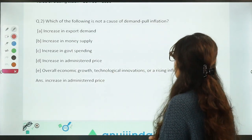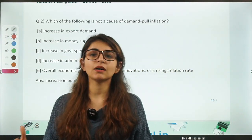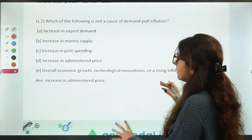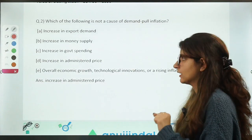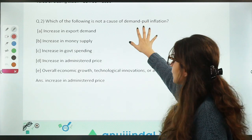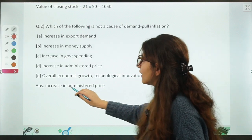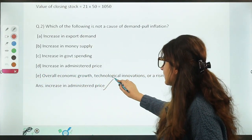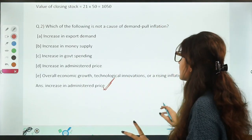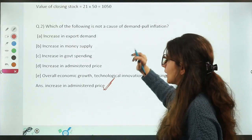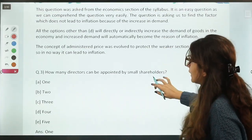Which of the following is not a cause of demand pull inflation? Again, a very easy question. When we study inflation, it is basic to understand its causes. The causes of inflation are characterized into two parts: demand pull inflation and cost push inflation. Various causes are covered under demand pull inflation. The answer is 'increase in administered price' because if the cost price of a value increases, that comes under cost push inflation and not under demand pull inflation. This was an easy conceptual question from economics.